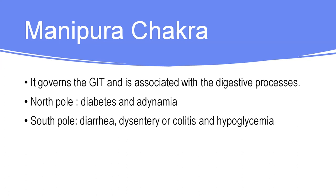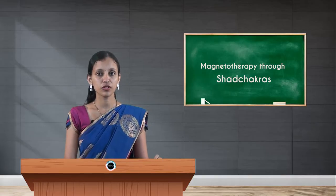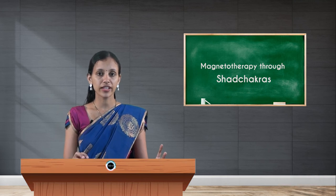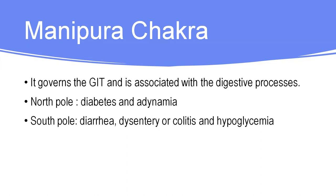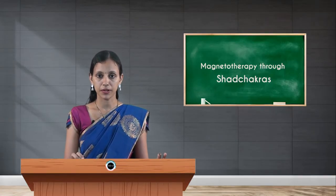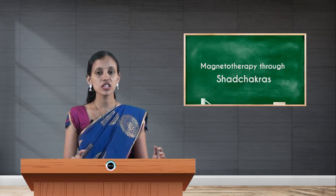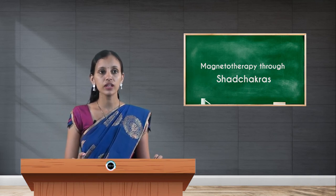Manipura chakra is located at the solar plexus, at the center of the umbilicus. It is related to the digestive system and digestive processes. In case of diabetes or adynamia, use the north pole of the magnet. In case of diarrhea, dysentery, colitis, or hypoglycemia, use the south pole. In these disorders, place the magnet over Manipura chakra.